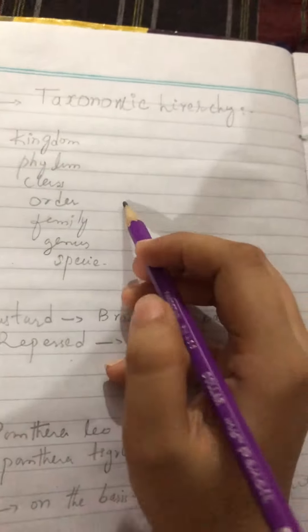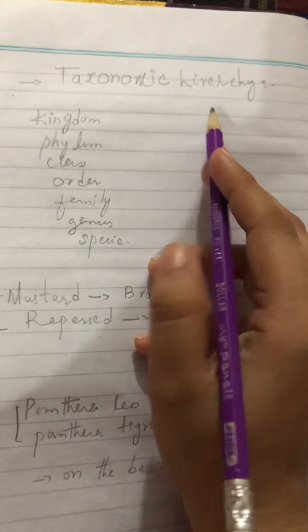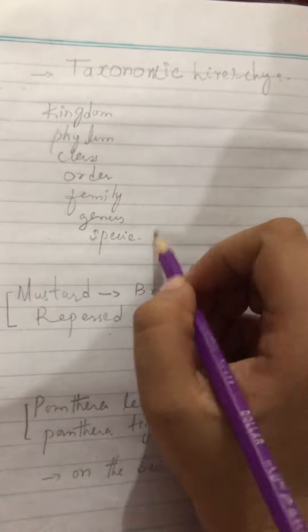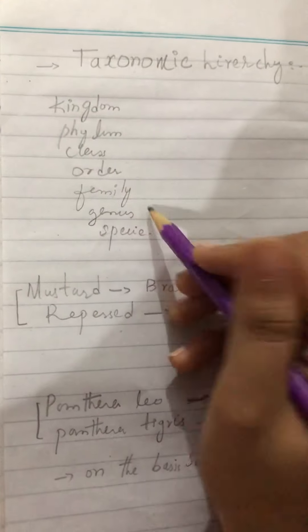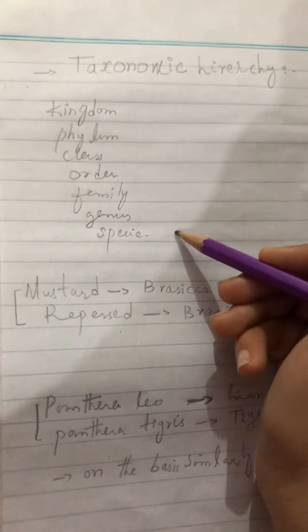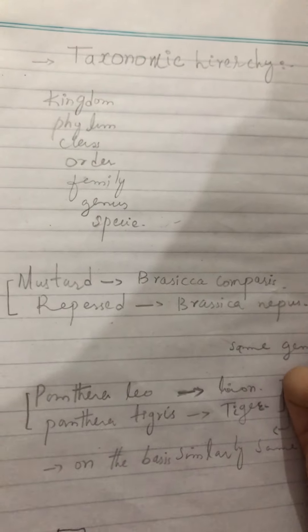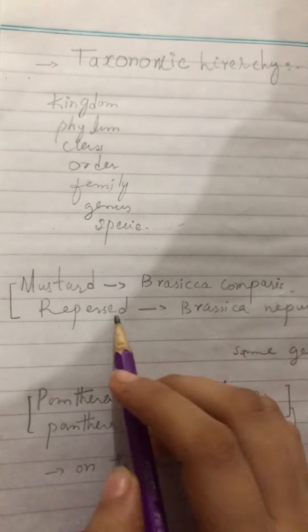Today our topic is taxonomic hierarchy. Here are the seven classifications: Kingdom, Phylum, Class, Order, Family, Genus, and Species. We will talk about what each of these is.